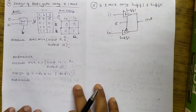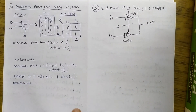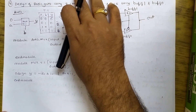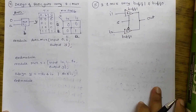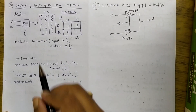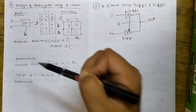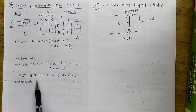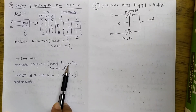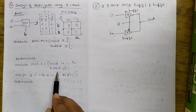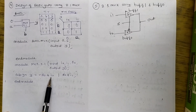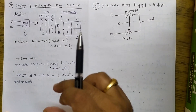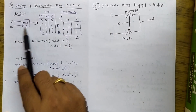Now, design of basic gates using a 2-to-1 MUX. This is one important question that students often find confusing. I am designing an AND gate using a 2-to-1 MUX. First I need the 2-to-1 MUX code: module mux2_1, inputs I0, I1, select line S0, and output Y. Assign Y = (S0_bar · I0) + (S0 · I1). This is the 2-to-1 MUX code.